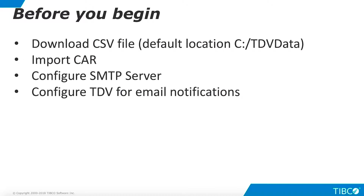Before you begin this demo, you must download a CSV file found in the additional resources. If you place this file in C:\tdv\data, the data source will work without any reconfiguration. You must also import the CAR file that contains the triggers and other resources. Alternatively, you may build these resources from scratch.